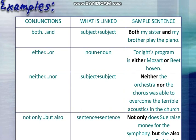'Both...and' links two subjects: 'Both my sister and my brother play the piano.' 'Either...or' joins two nouns: 'Tonight's program is either Mozart or Beethoven.' 'Neither...nor' joins two subjects: 'Neither the orchestra nor the chorus was able to welcome the guests.' 'Not only...but also' joins two sentences: 'Not only does Sue raise money for the assembly, but she also ushers it.' These appear in pairs — that's what makes them correlative.